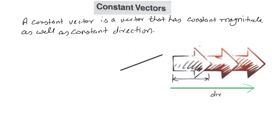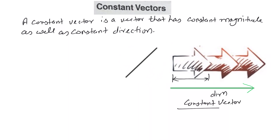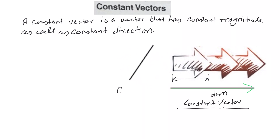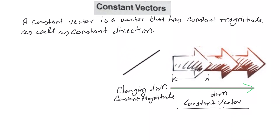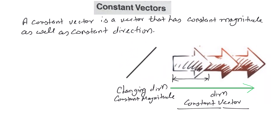This is the constant magnitude — it has length up to here only and the length is always remaining constant, and direction is also constant. So this is a constant vector. We have studied that a constant vector is a vector that has both constant magnitude as well as constant direction. Now we will go through some important theorems — there are three theorems and we will cover one theorem in this lecture.